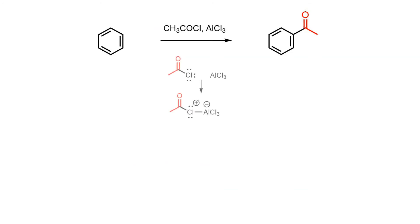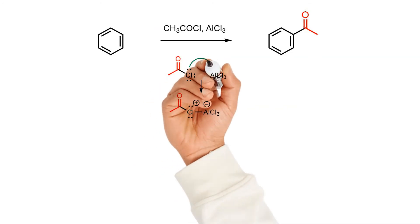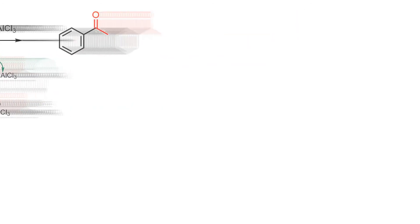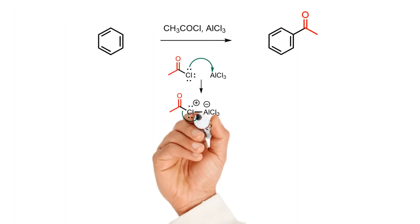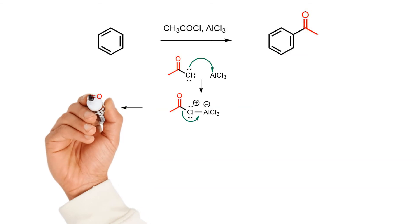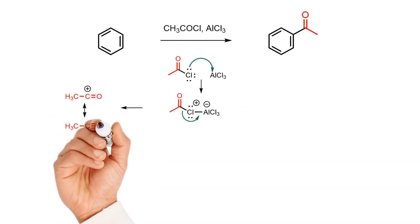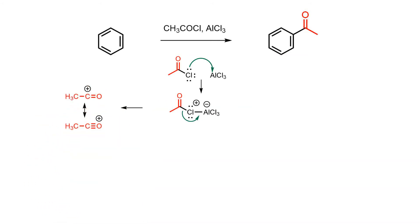To get the reaction started, the acid chloride and Lewis acid interact to give an activated complex. This complex then collapses with loss of leaving group to generate the highly electrophilic acylium ion, which is stabilised by delocalisation from the carbonyl oxygen.